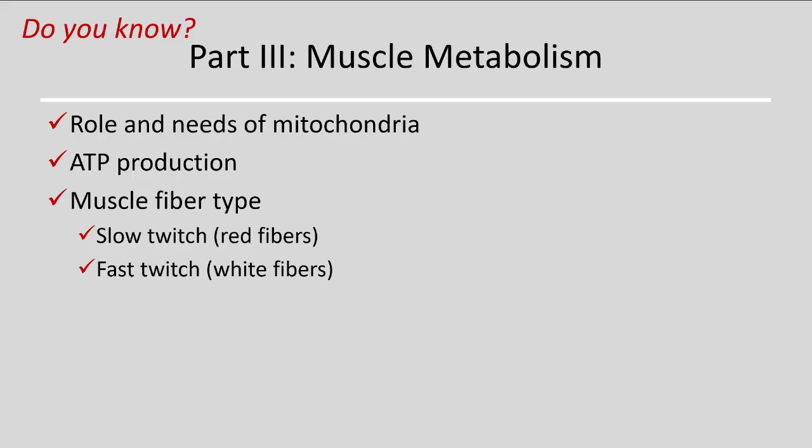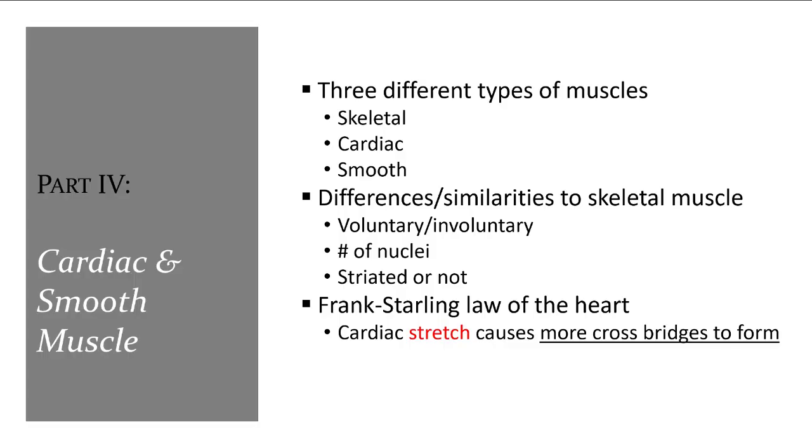You should know the role of mitochondria in muscle metabolism — mitochondria needs oxygen and is where most energy is made, while elements from glycolysis in the cytosol feed into the mitochondria so they work together. You should know how ATP is produced and the differences between slow twitch and fast twitch muscle fibers. Finally, let's look at some differences between cardiac and smooth muscle.